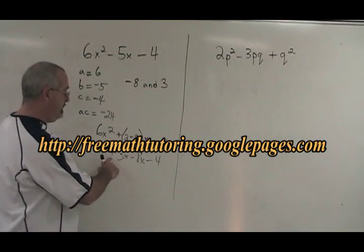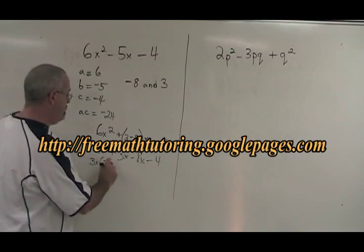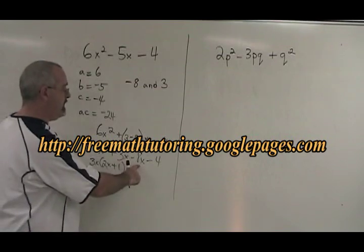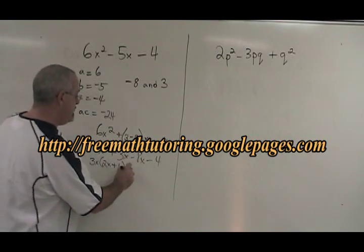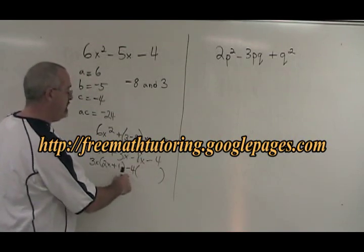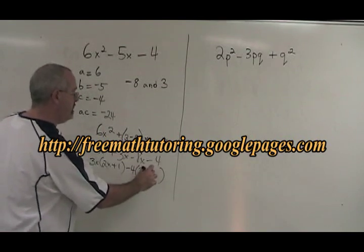The greatest common factor of 6x squared and 3x is 3x. So we factor it out, and we get 2x plus 1. The greatest common factor of negative 8x and negative 4 is negative 4. So I write minus 4 here, factor it out, negative 8x divided by negative 4 is 2x, negative 4 divided by negative 4 is plus 1.